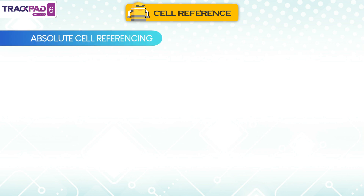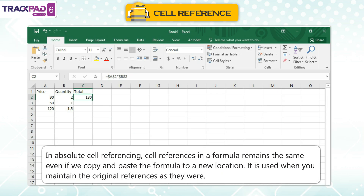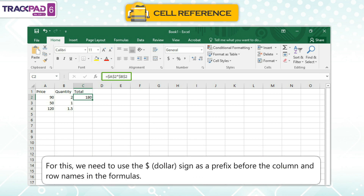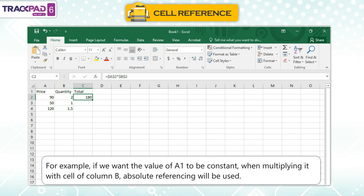Absolute Cell Referencing. In absolute cell referencing, cell references in a formula remain the same even if we copy and paste the formula to a new location. It is used when you want to maintain the original references as they were. For this, we need to use the dollar sign as a prefix before the column and row names in the formulas.